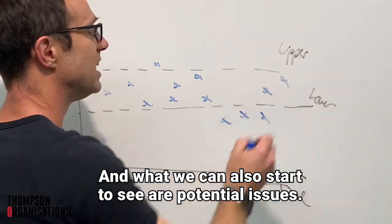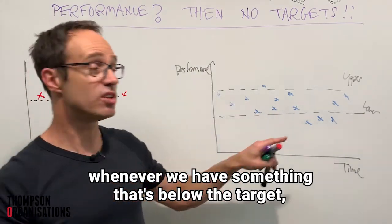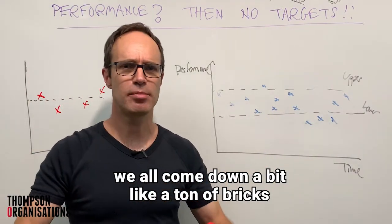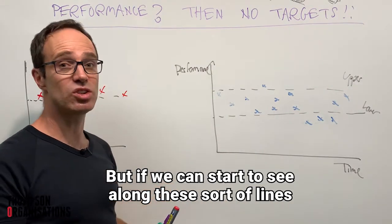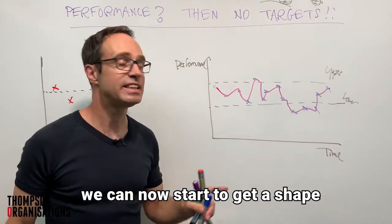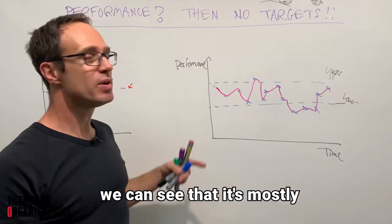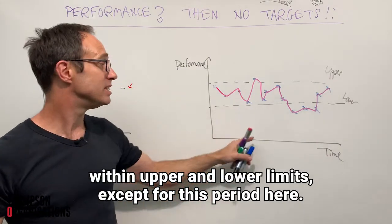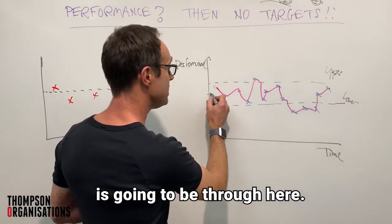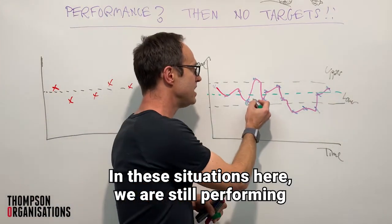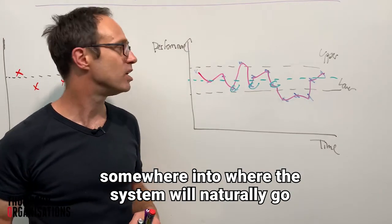We can also start to see potential issues. Under the old system, whenever we have something below the target, we all come down on it like a ton of bricks and declare problem, declare emergency. But if we plot the line and get a shape of how everything's actually looking, we can see that performance is mostly within upper and lower limits, except for this one period here. The traditional spot where the target goes is going to be through here, and in many of these situations we are still performing somewhere the system will naturally go from time to time.